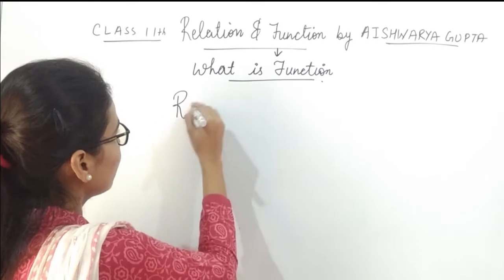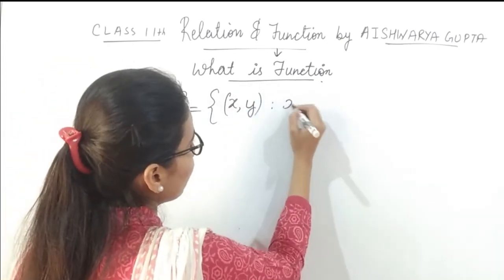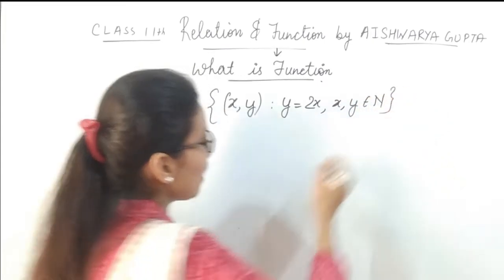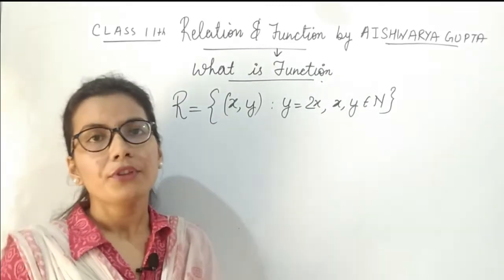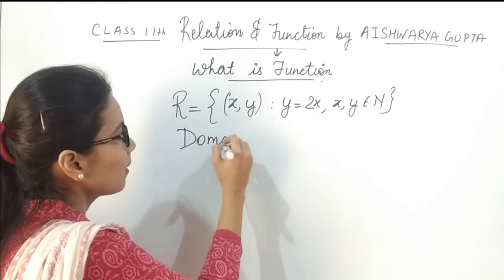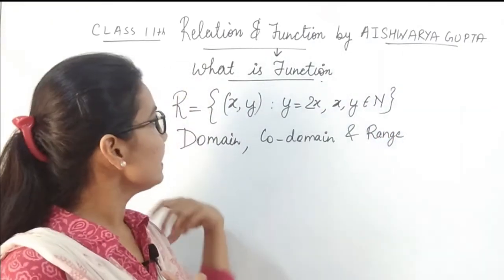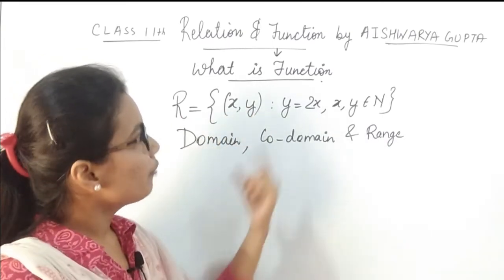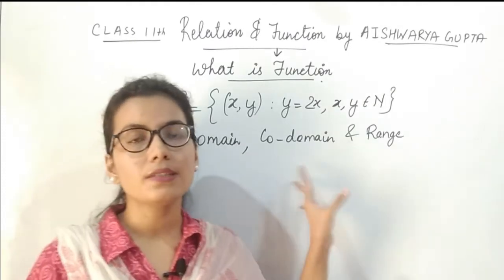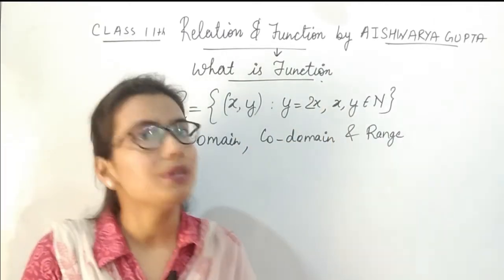Now let's take a formal example. Let R be a relation {(x, y)} such that y = 2x, where x and y belong to natural numbers. The question is: check whether this relation is a function or not, and find the domain, co-domain, and range.